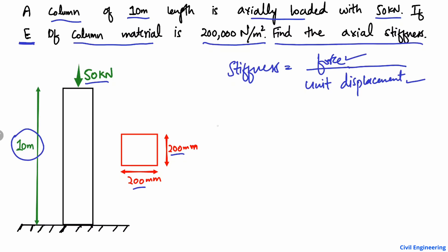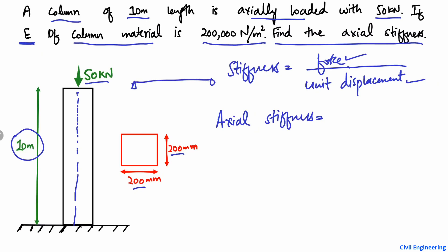Now, what is axial stiffness? Axial stiffness is for an axial member — in this case, the column — because a column is mostly loaded axially. The load is applied along the axis of the column, so we call it an axially loaded member.